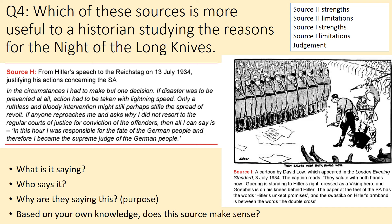At the bottom I've got some hints about how we look at authorship, because within this question you'll be looking at content — is it accurate, does it match what you know? — but also authorship: are they reliable, do you trust what they're saying? The four criteria we use when talking about authorship as historians are: what is it saying, who is saying it, why are they saying it, and based on your own knowledge, does this source make sense?